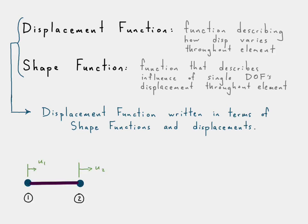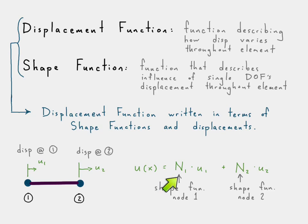So here we have an example of a truss element with two displacements, and we write the displacement function in terms of its shape functions, each shape function multiplied by its corresponding degree of freedom. And there's the displacement function.